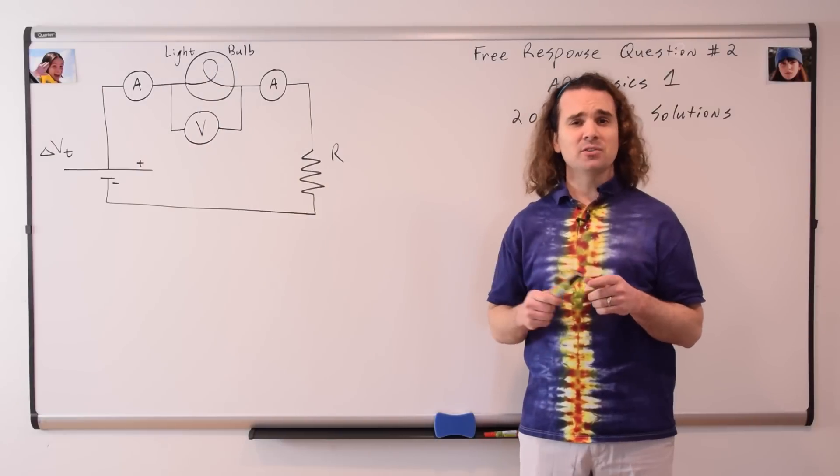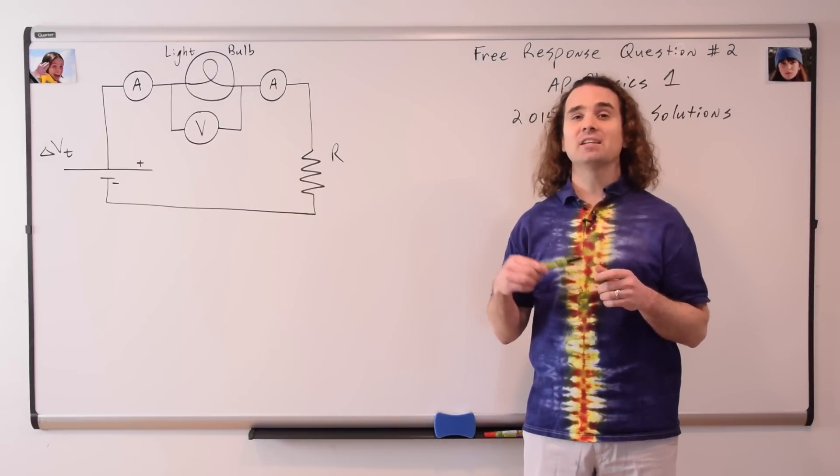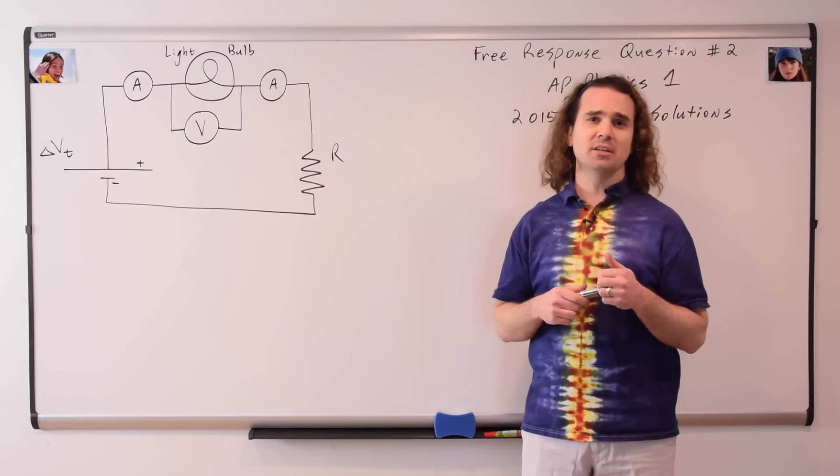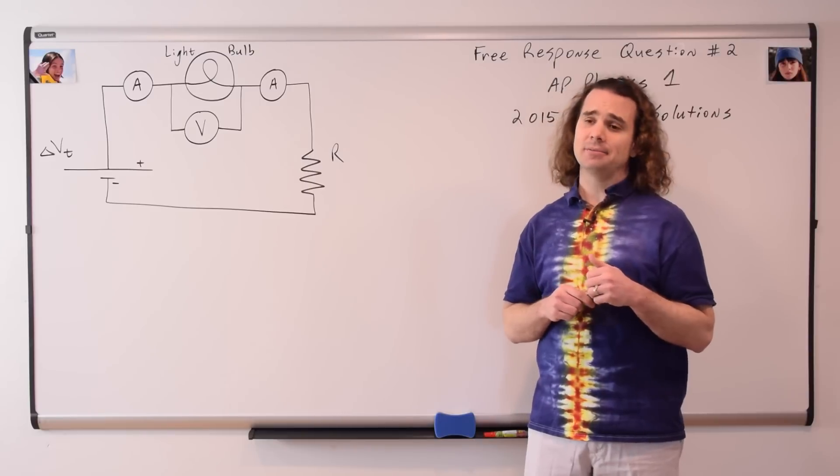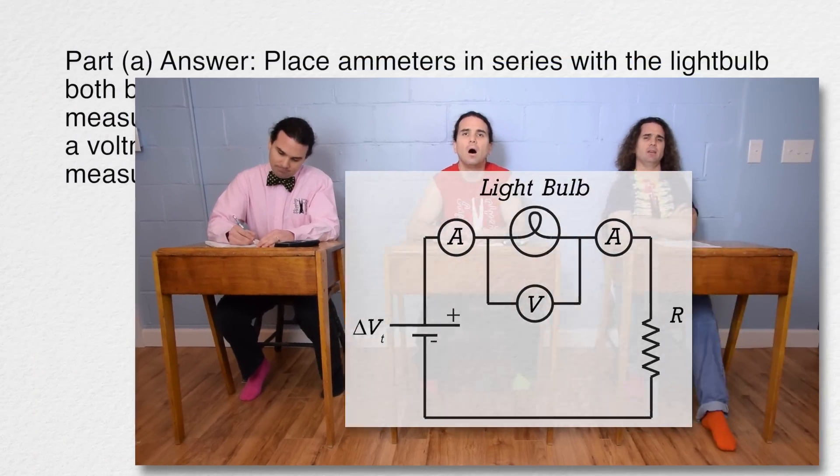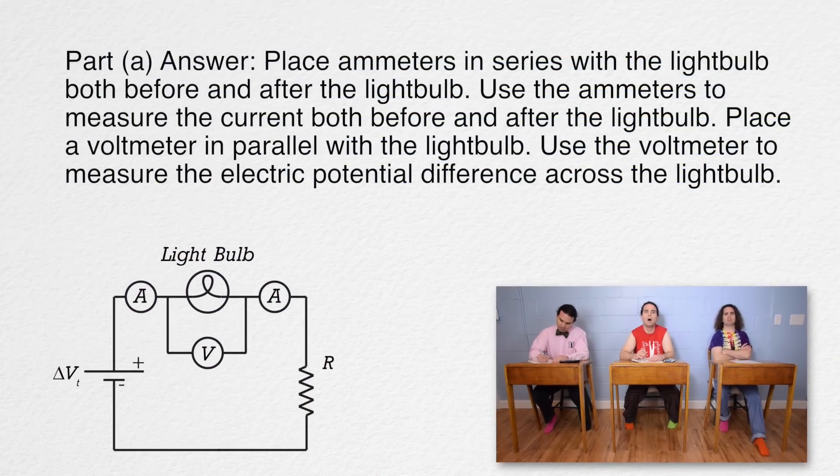Now we've drawn the circuit diagram. However, we haven't described the experimental procedure. Bo, could you please do that? We could say, place ammeters in series with the light bulb both before and after the light bulb. Use the ammeters to measure the current both before and after the light bulb. Place a voltmeter in parallel with the light bulb and use the voltmeter to measure the electric potential difference across the light bulb.